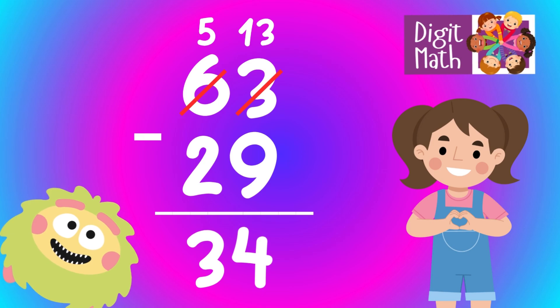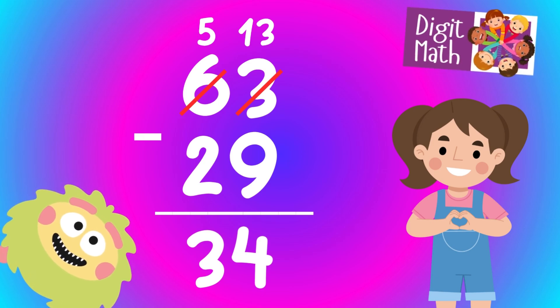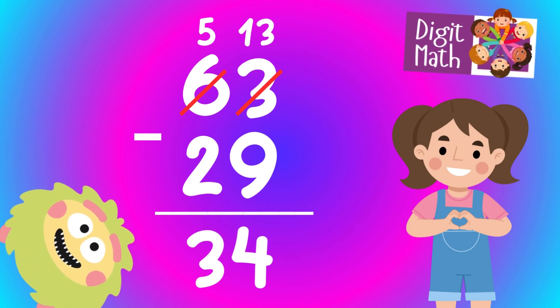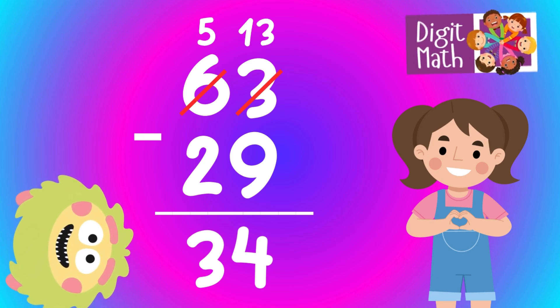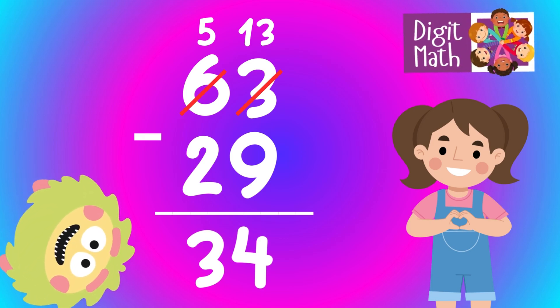So the final result is 63 minus 29 equals 34.